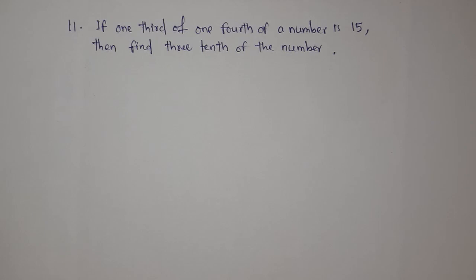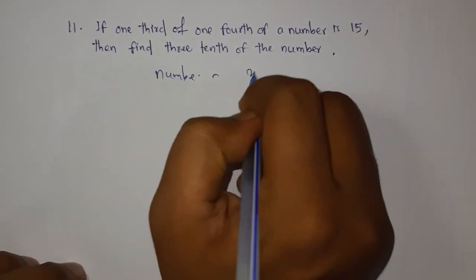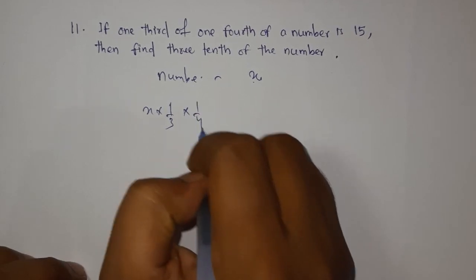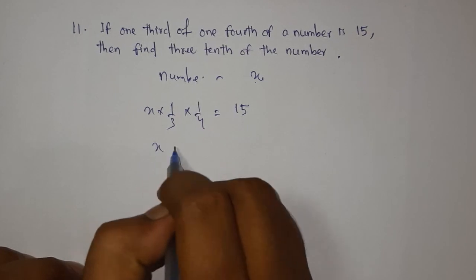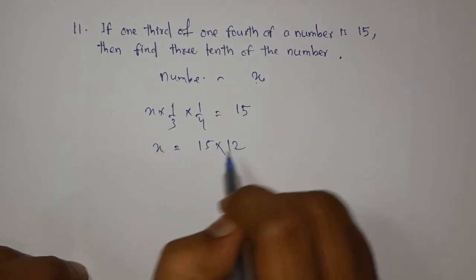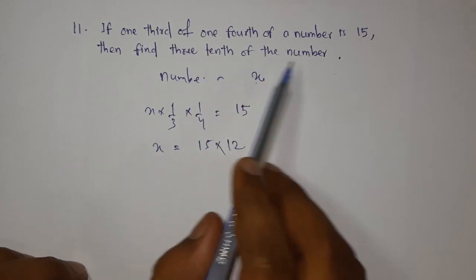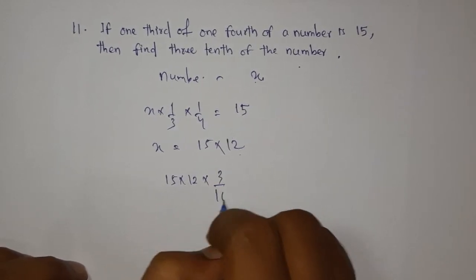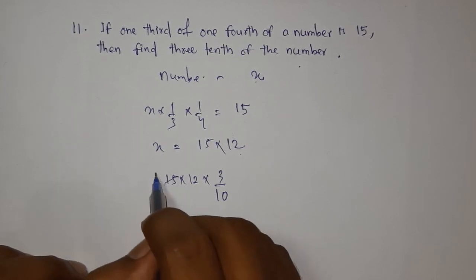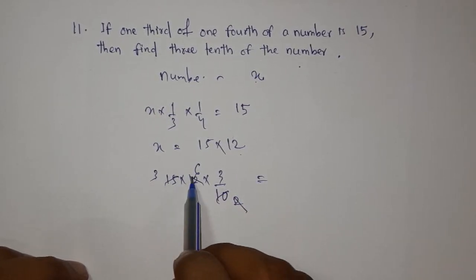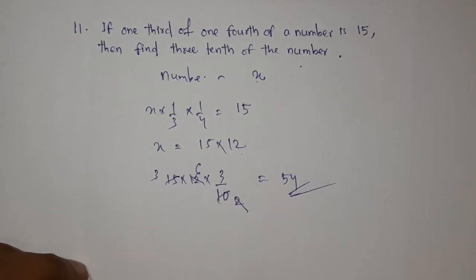Next question: if one-third of one-fourth of a number is 15, find three-tenths of the number. Let the number be x. One-third into one-fourth of x equals 15, so x divided by 12 equals 15, giving x equals 180. Now three-tenths of 180 equals 3 by 10 into 180 equals 54. The answer is 54.